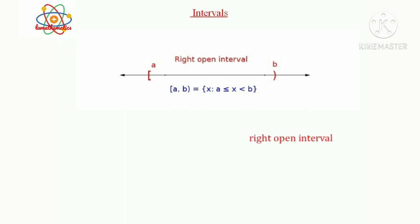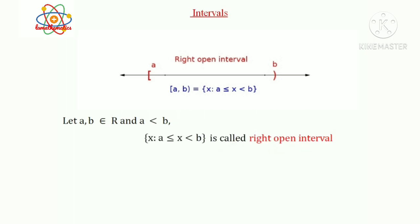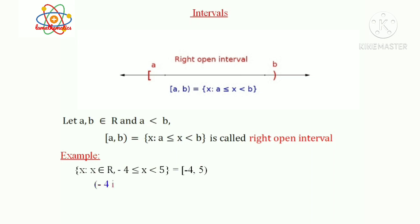This interval is called a right open interval. Let a, b ∈ R and a < b. Then the set {x such that a ≤ x < b} is called a right open interval — right open means left is closed. It is denoted by [a, b). Therefore, right open interval [a, b) = {x such that a ≤ x < b}. Example: {x such that x ∈ R and -4 ≤ x < 5} = interval [-4, 5). Here, -4 is included and 5 is excluded in the set.